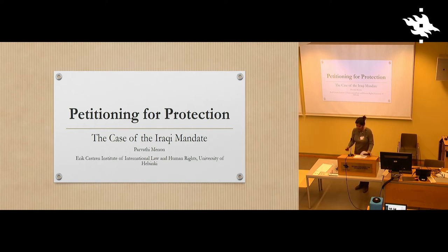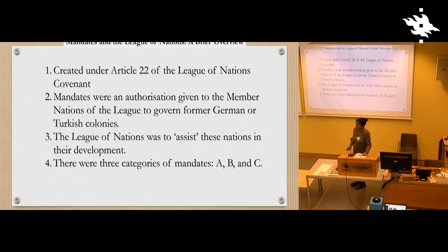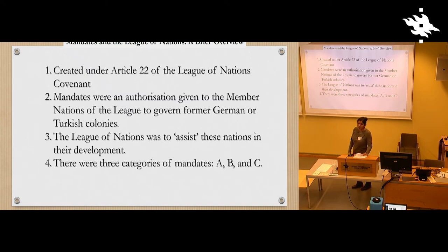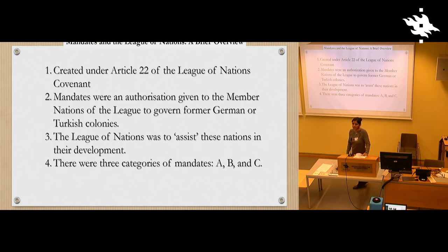I'll start with just a broad overview of what the mandates really were for those of you who don't know. It was created under the auspices of the League of Nations after the First World War and under Article 22 specifically of the League of Nations Covenant. The whole idea of the mandates was that the Turkish and German territories of the colonies were to be distributed to the victorious allies of the war, and the League of Nations was meant to help these territories develop — that was the mandate behind the mandate.